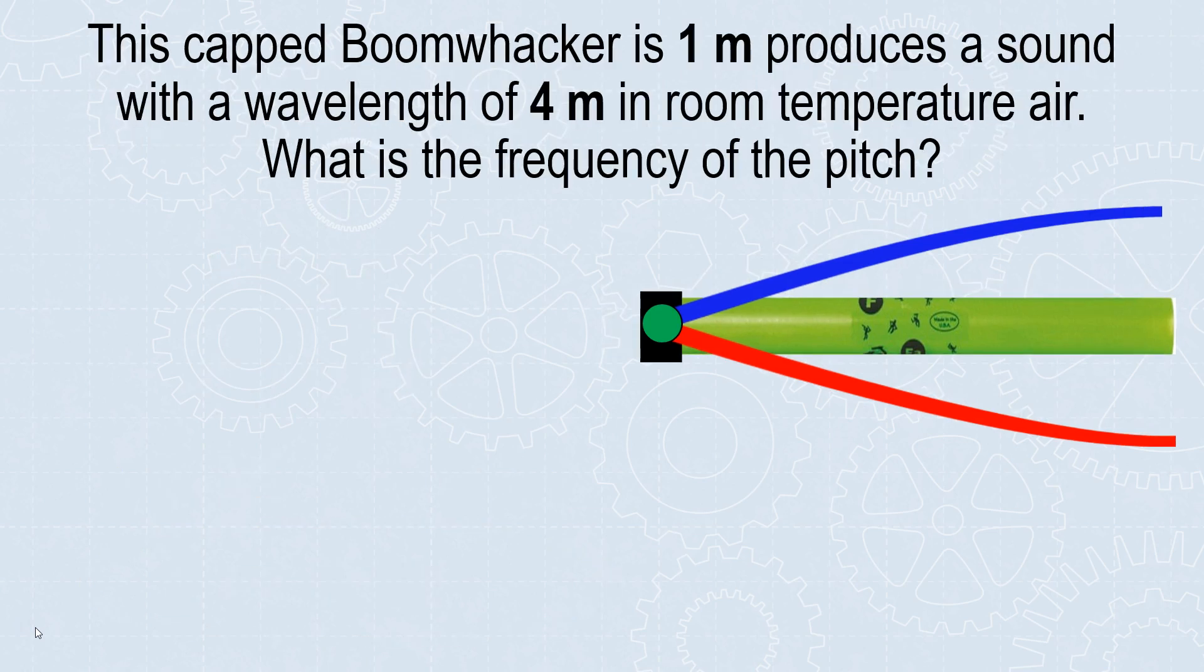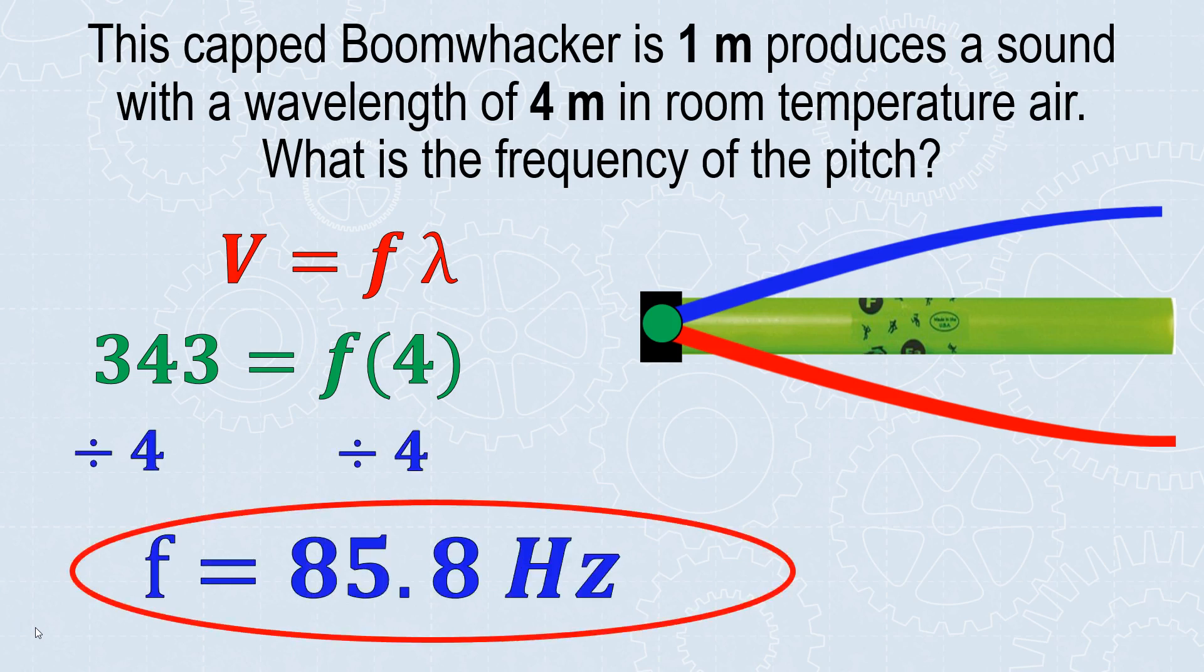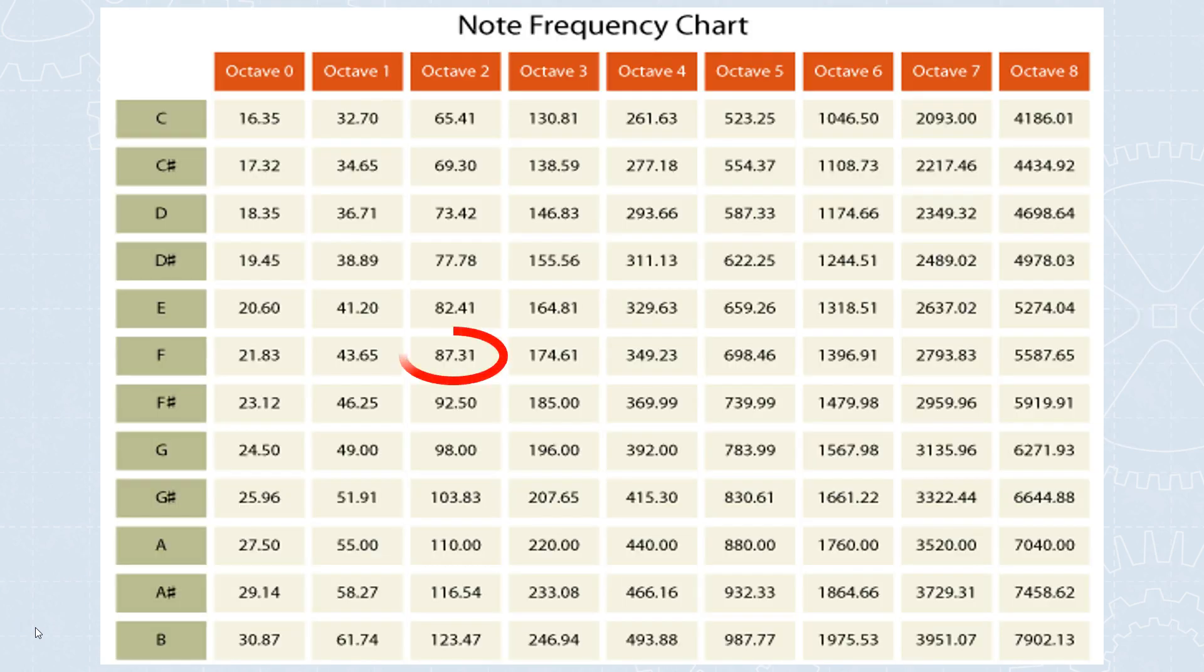Now that I know the wavelength, I can find the frequency. Velocity is 343 because it's air. Frequency is unknown. Wavelength is 4. Using v = f × λ, I need to divide both sides by 4 to solve for frequency. That gives 85.8 Hz, which is about an F note.